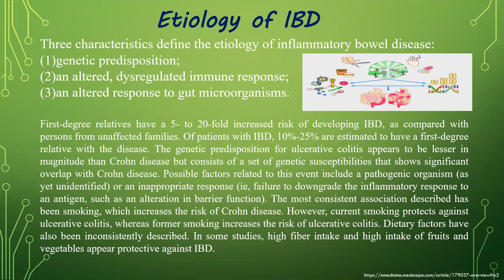First-degree relatives have a five- to twenty-fold increased risk of developing IBD compared to persons from unaffected families. Up to 25 percent of patients with IBD are estimated to have a first-degree relative with the disease. The genetic predisposition for ulcerative colitis appears to be lesser in magnitude than for Crohn's disease, but consists of genetic susceptibility genes that show significant overlap with Crohn's disease. The most consistent environmental association is smoking, which increases the risk of Crohn's disease; however, current smoking protects against ulcerative colitis, whereas former smoking increases the risk of ulcerative colitis.